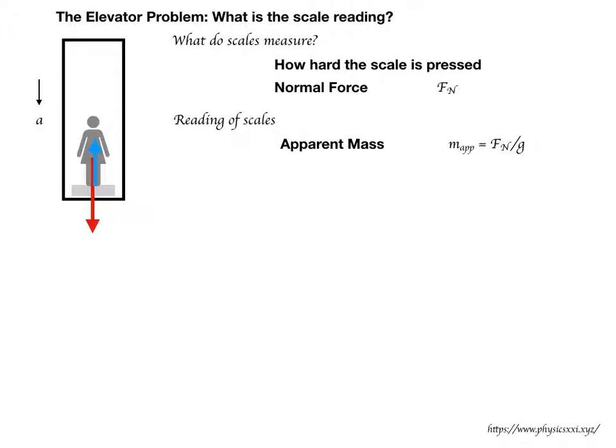It turns out that even though the scale reads how hard the feet are pressed against it, the reading is given in kilograms by simply dividing the newtons by G, where G is the gravitational acceleration, 9.8 meters per second squared in magnitude. This works in normal conditions since we don't have acceleration when we measure our mass at home. The normal force equals the gravitational force, both cancel out, and the apparent mass equals mg divided by G, which is simply our actual mass.